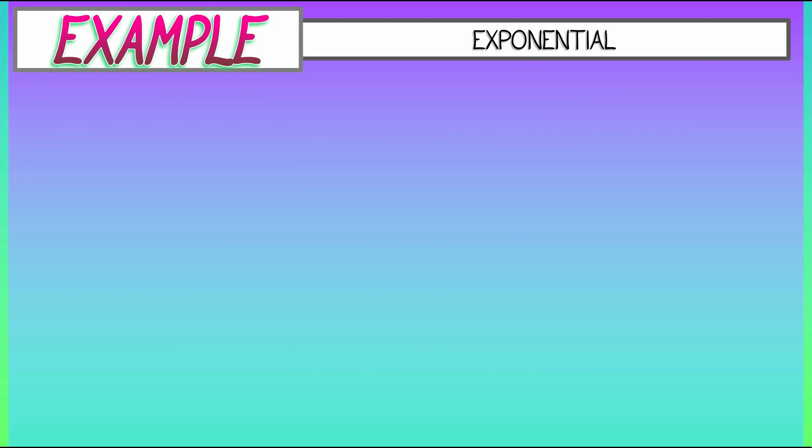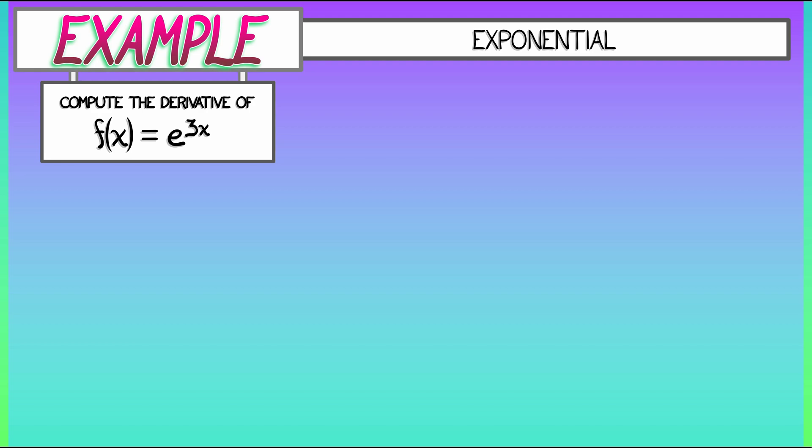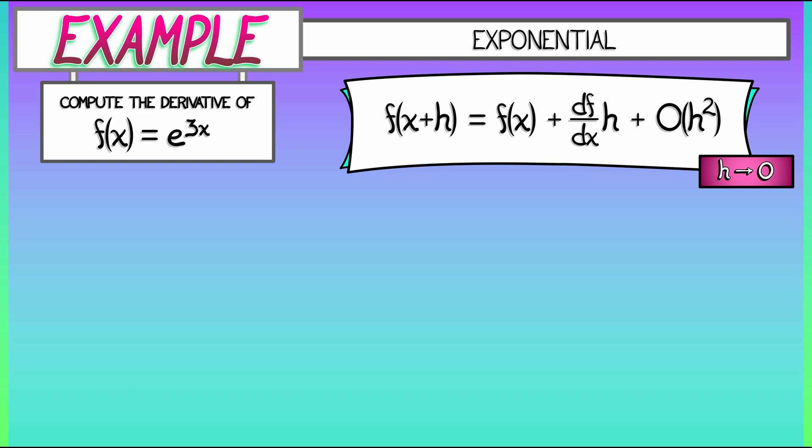First, let's look at an exponential function. Compute the derivative of f(x) equals e to the 3x. And let's recall how this first-order variation method works. We look at f(x+h) and we expand that out in the limit as h goes to 0 as f(x) plus the derivative of f times h plus big O of h squared. So that coefficient of the first-order term in h is the derivative f prime or df/dx in this case.